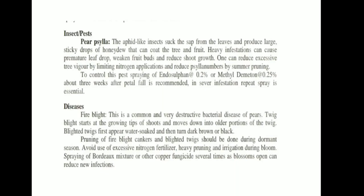Now Insects and Pests. Pear Psylla: These aphid-like insects suck the sap from the leaves and produce large sticky drops of honeydew that can coat the tree and fruit. Heavy infestations can cause premature leaf drop, weaken fruit buds, and reduce shoot growth. One can reduce excessive tree vigor by limiting nitrogen applications and reduce psylla numbers by summer pruning. To control this pest, spraying of endosulfan 0.2% or methyl demeton 0.25% about three weeks after petal fall is recommended. In severe infestations, repeat spray is essential.